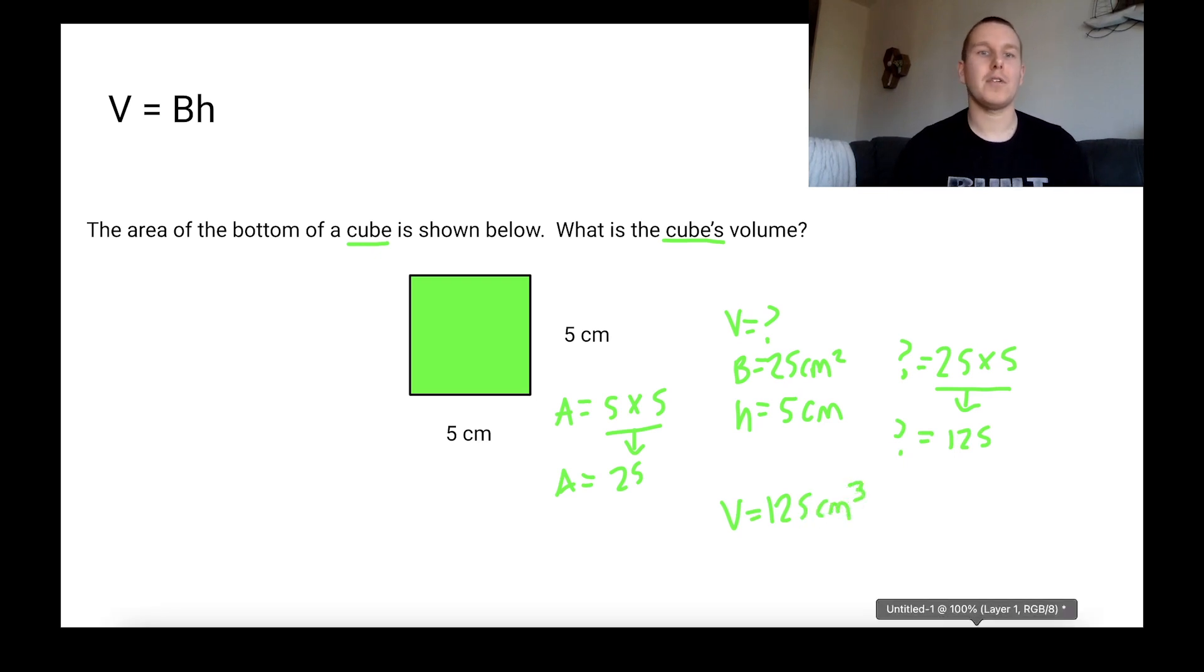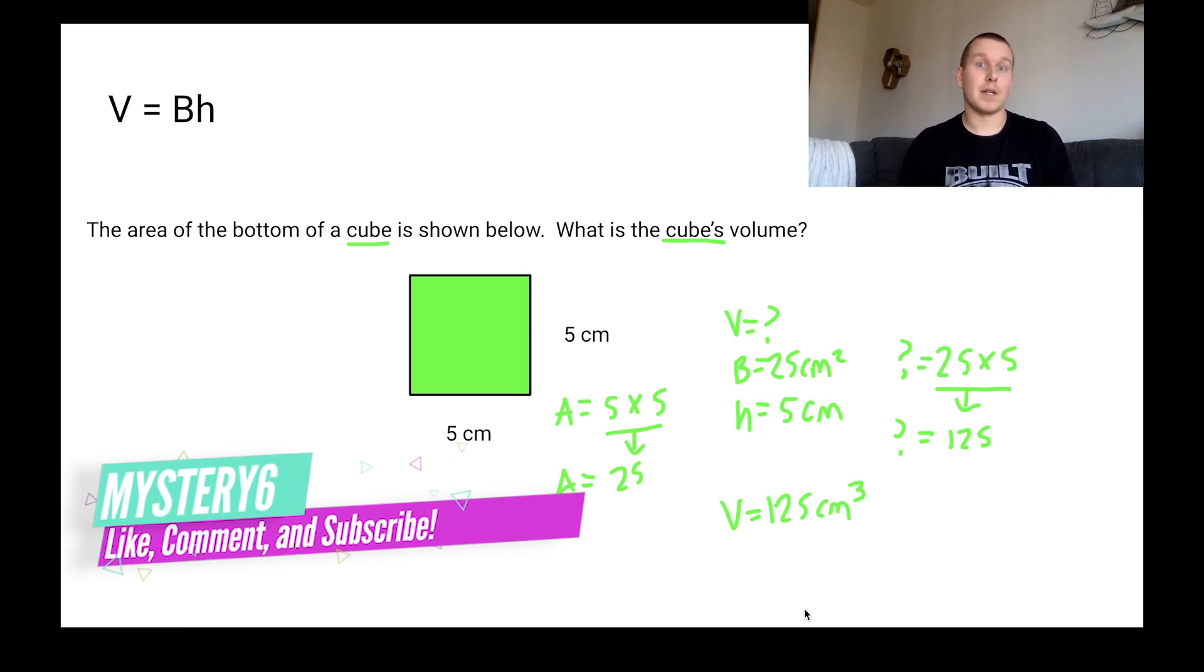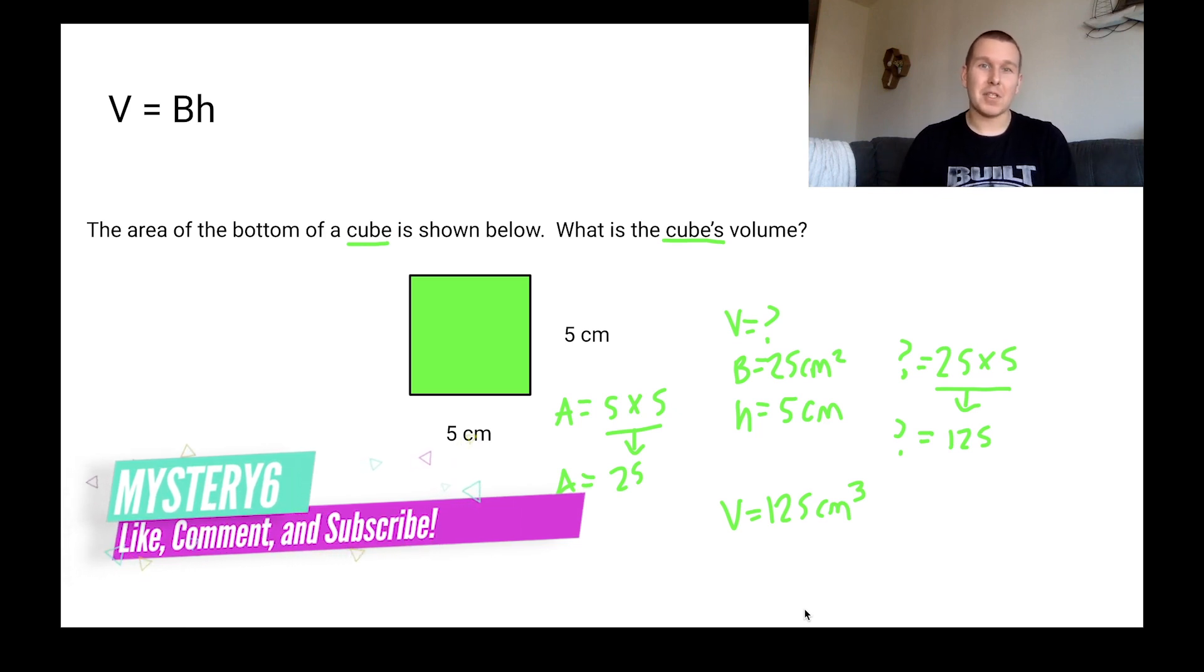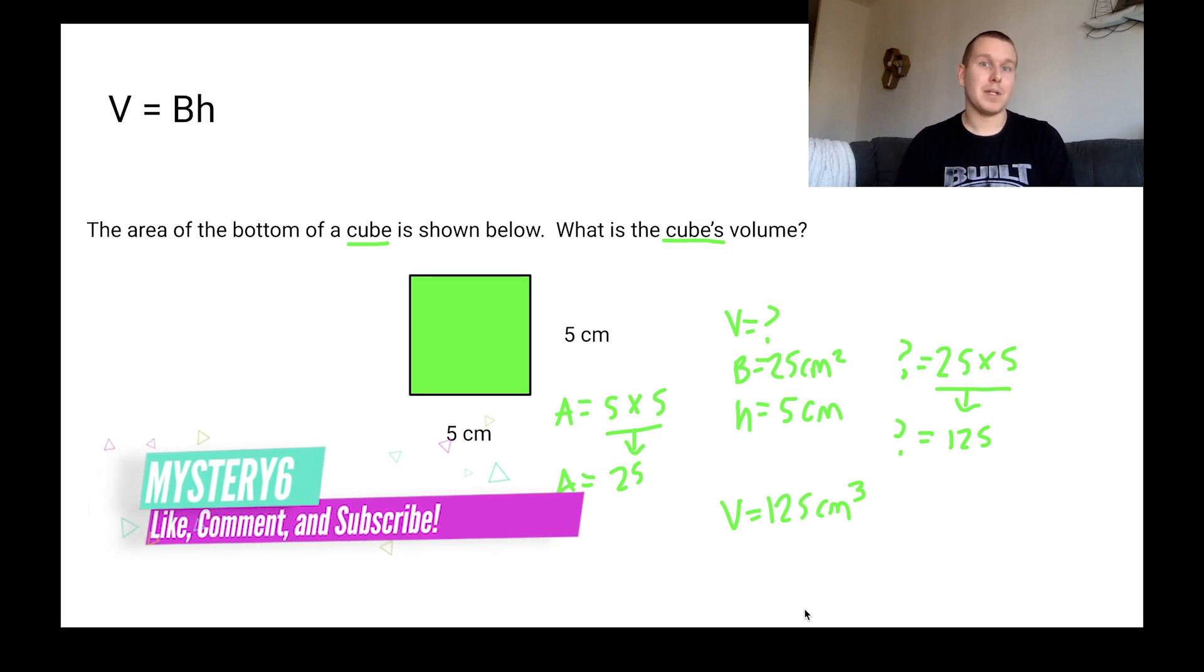So as you continue to do problems like this, you're going to figure out whether or not you're going to use V equals length times width times height, or V equals big B times little h. There's going to be certain scenarios where it's more appropriate to use one or the other. And there's going to be some word problems where it doesn't really matter. It's whatever you would like to use. I hope this video is helpful. I hope you get a little bit more practice with the formula V equals big B times little h so you can get a hundo on your next test. Keep learning L's bros.